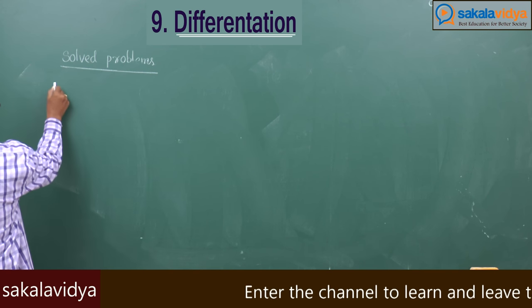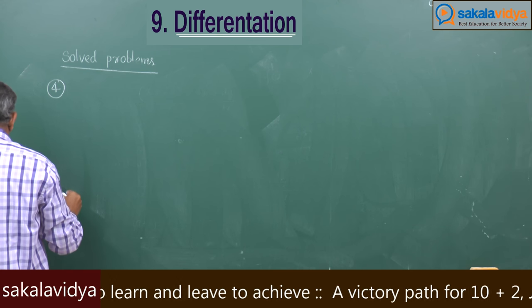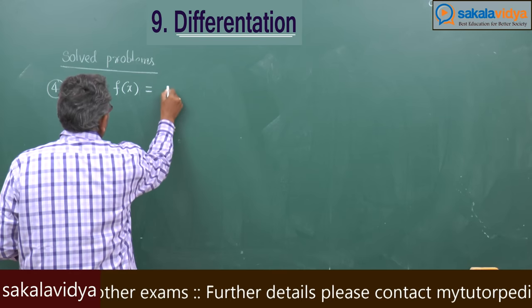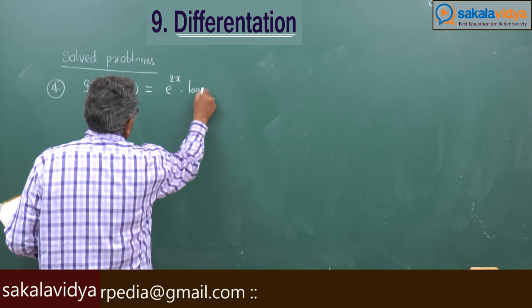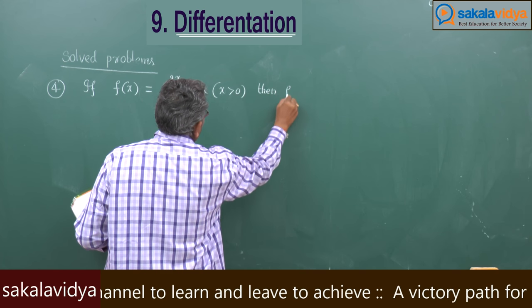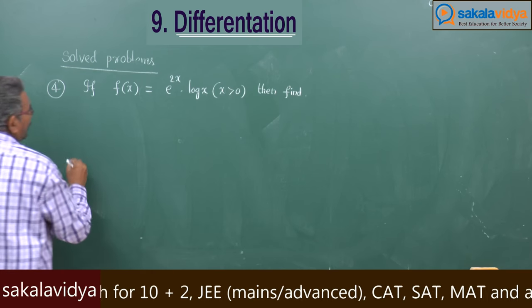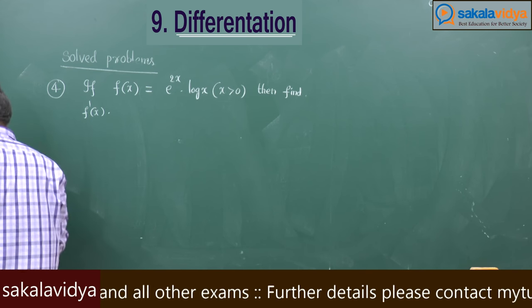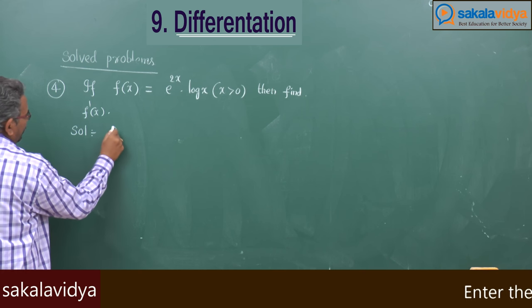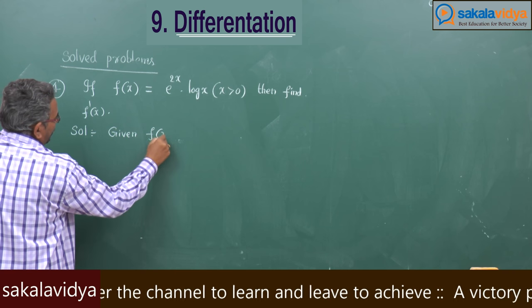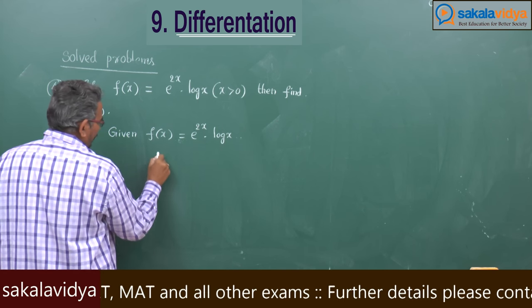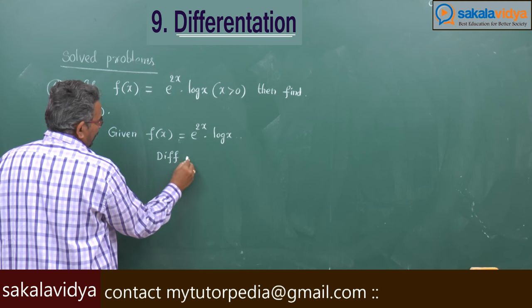Fourth problem: if f of x is equal to e to the power 2x into log x, where x is greater than 0, then find f dash x. The given function is f of x equal to the product of two functions, e power 2x into log x. Differentiate both sides with respect to x.